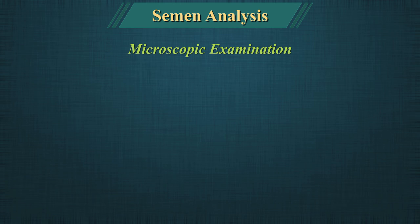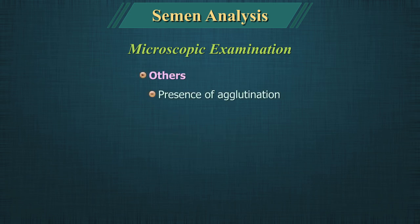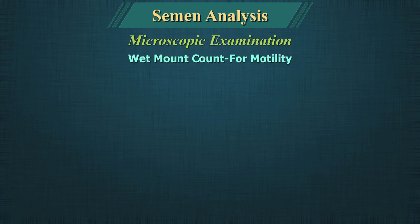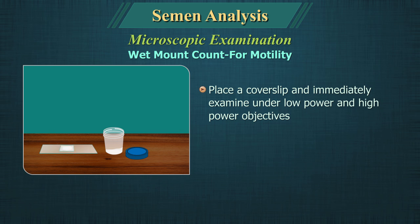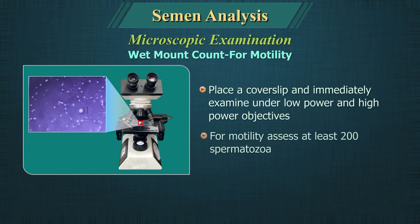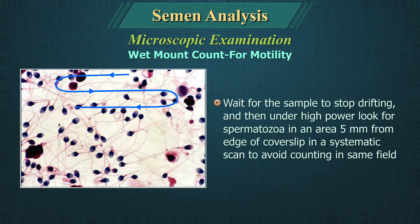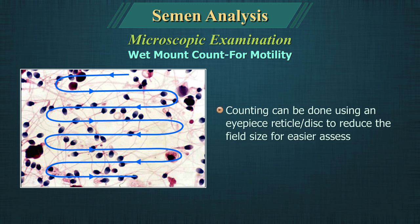Microscopic examination of semen includes total sperm count, motility, morphology, vitality, and others such as presence of agglutination, immature forms, pus cells and miscellaneous factors. Wet mount cover slip preparation: Take a pre-warmed glass slide, place a drop of well-mixed semen sample, place a cover slip and immediately examine under low power and high power objectives. For motility, count at least 200 spermatozoa. Wait for the sample to stop drifting, then under high power, look for spermatozoa in a systematic scan 5 mm from the edge to avoid counting in the same field. Counting can be done using an eyepiece reticle or disc to reduce the field size for easier counting.